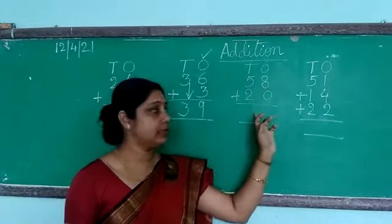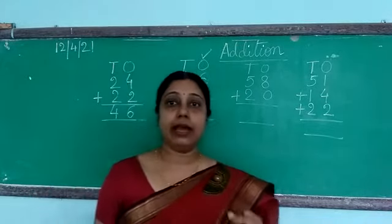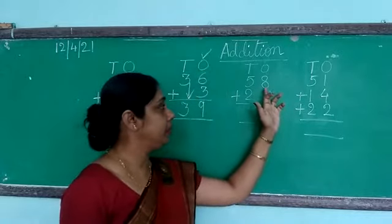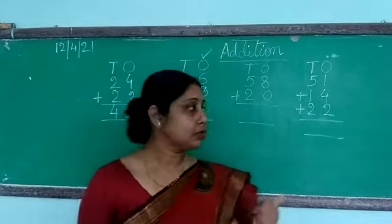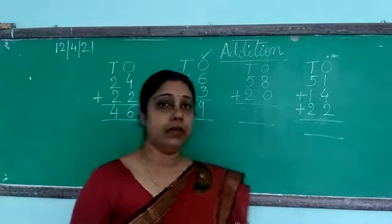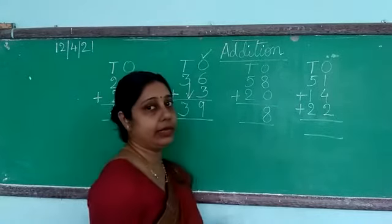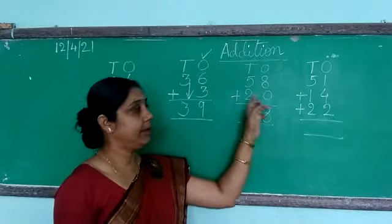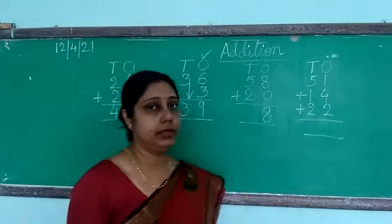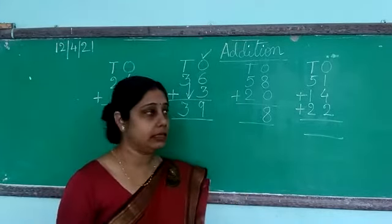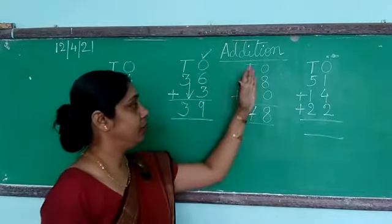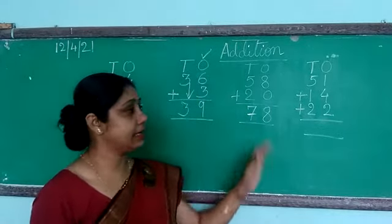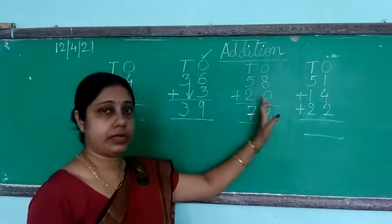Now let us go to the next question: 58 plus 20. We have learnt in the properties of addition that whenever we add any number with 0, the sum is the digit itself. So in the ones place, 8 plus 0 — since 0 means nothing, the answer is 8. Now in the tens place, 5 plus 2: after 5 you count 2 more, that is 6, 7. So we write 7. The answer is 78.